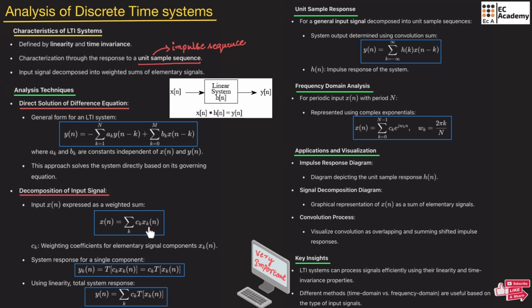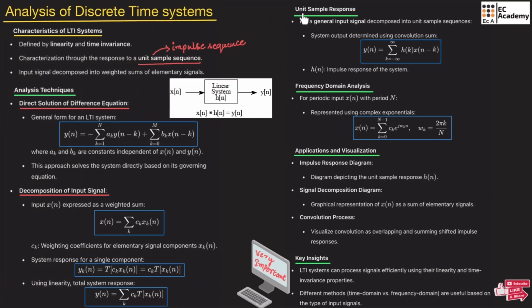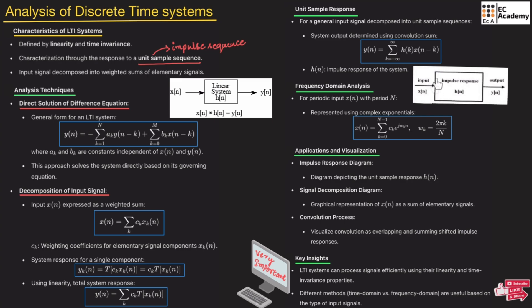In the first method, we directly use the formula to find the response; in the second method, we decompose the input signal and then find the response. Now let us understand the unit sample response. The unit sample response is obtained when the input is the impulse sequence. The system output is represented as: Y(N) = summation of K from minus infinity to infinity of H(K) · X(N-K). This is the formula for the unit sample response of the LTI system and for representing an LTI discrete time sequence.